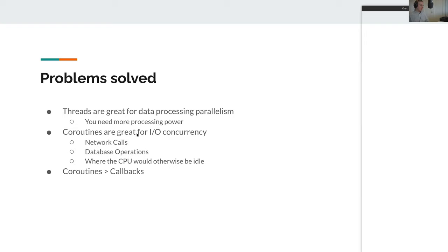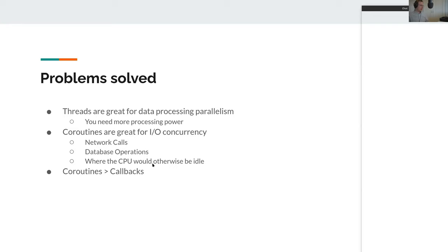Coroutines, however, are often very great for I/O concurrency. So if your bottleneck is I/O — network calls, database operations, or other operations where the CPU would otherwise be idle — then coroutines are a great solution. That allows you to do the network call and then yield, so another task can do something while the network call is waiting for a response. Database operations are basically the same thing: you do a query and then wait for the I/O operation to finish.